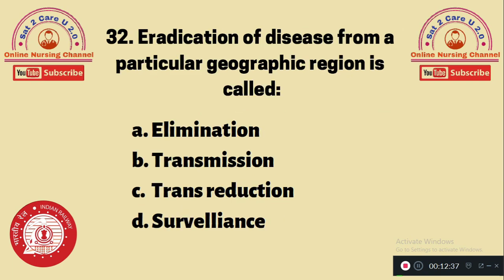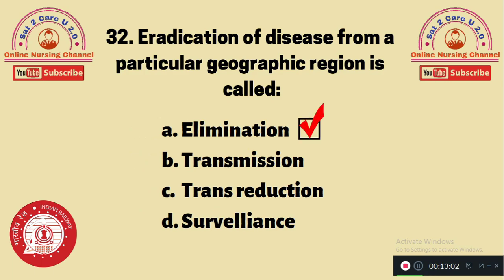Question 32: Eradication of a disease from a particular geographic region is called — A. Elimination, B. Transmission, C. Transmission reduction, D. Surveillance. When you remove a disease globally, that is called eradication. But when you remove a disease from a particular geographical area, that is called elimination. The answer is A.